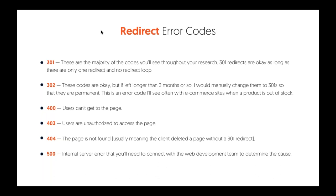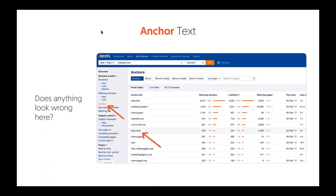The main ones you need to pay attention to are 301, 302, 404, and 500. Always try to use 301s and try to avoid using 302s. 404s aren't good, and 500 errors aren't good either. The worst errors are 500 — if you keep getting 500 errors, you won't even rank on Google.